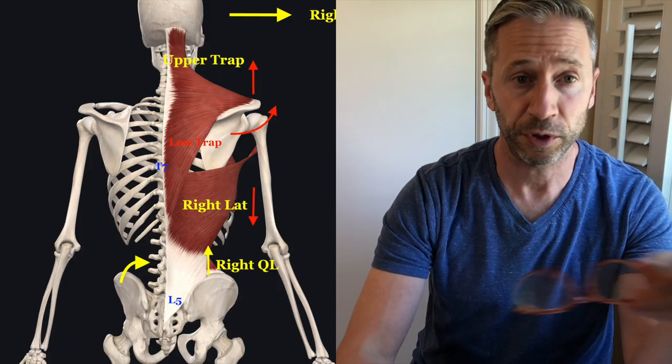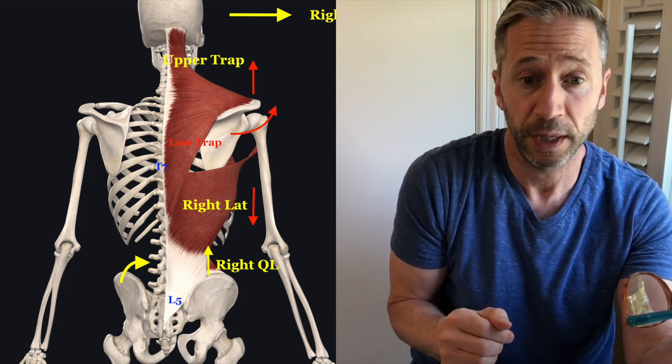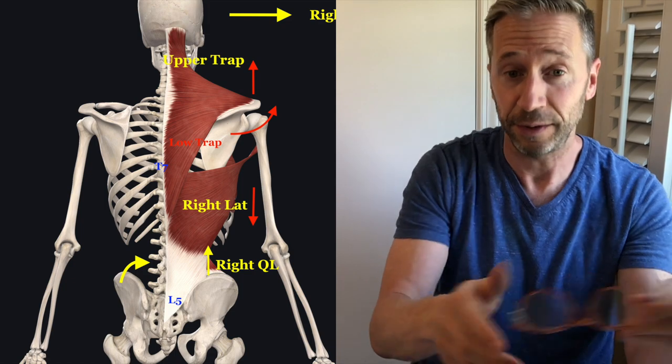This video is a short follow-up to the video I posted a couple days ago about right shoulder pain. I'm going to bring up the picture showing how the upper trap is pulling the shoulder blade up and the right lat is pulling the right arm down, creating a tug-of-war.